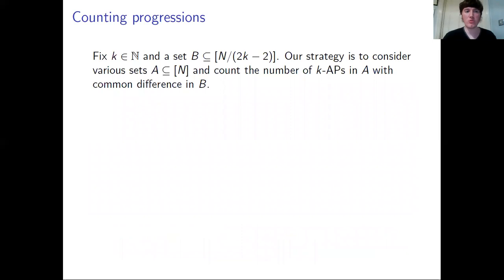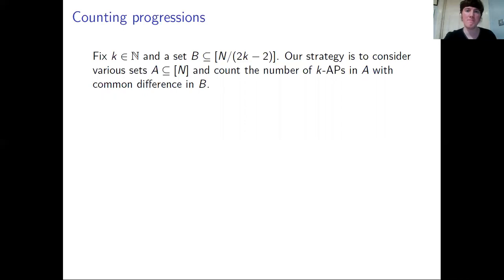Our general strategy is as follows. We take a positive integer K — the length of the progression we're looking for — and fix a set B. We look for K-term progressions whose common difference lies in B, and later we make an appropriate choice of B to ensure that the common difference has the same colour as the progression. The elements of B are not too large — we contain it in the interval n over 2(k-1) — because a K-term progression in {1, ..., n} must have common difference at most n over k-1.